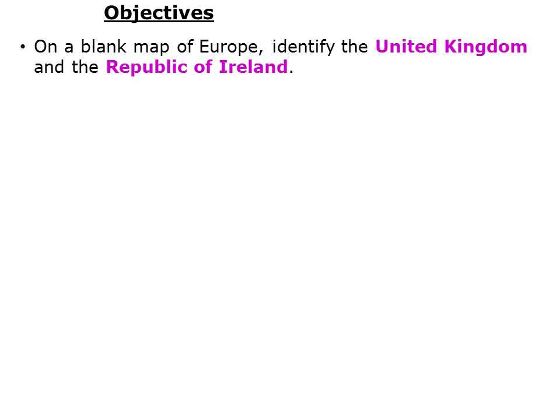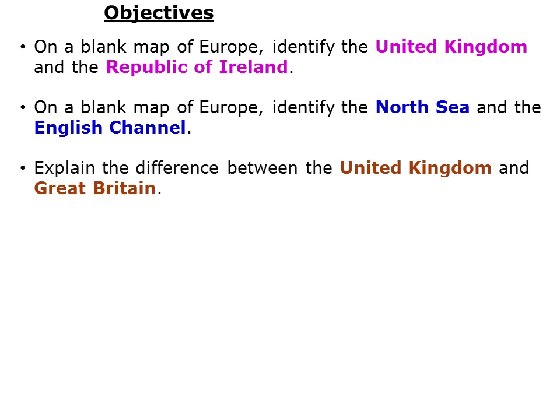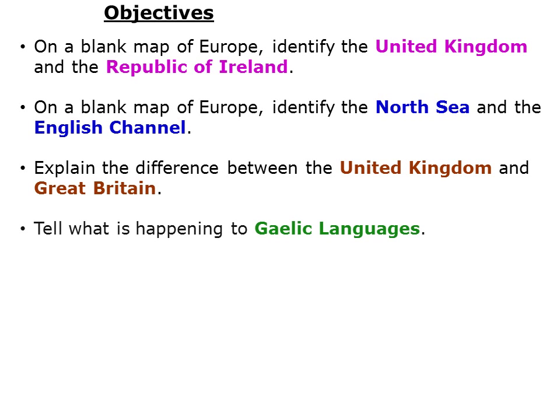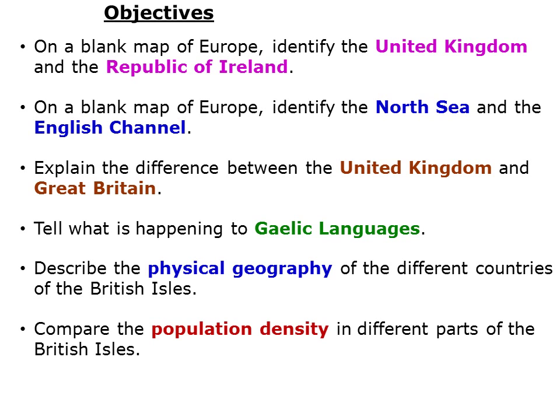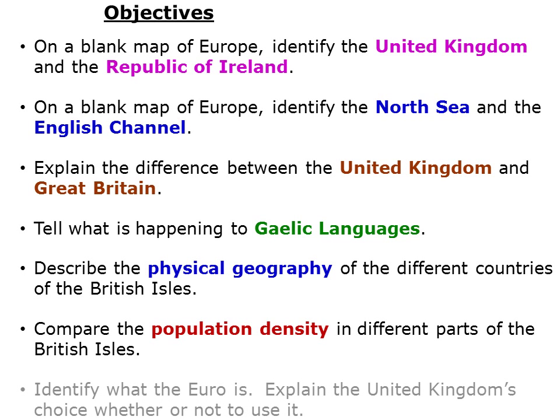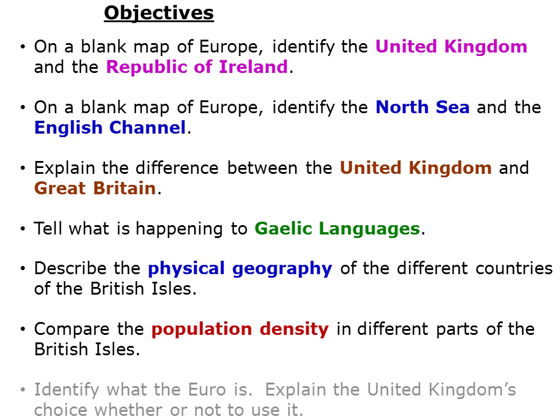Your objectives: On a blank map of Europe, you must be able to identify the United Kingdom and the Republic of Ireland. You must also be able to identify the North Sea and the English Channel. You must explain the difference between the United Kingdom and Great Britain. You must tell what's happening to Gaelic languages. You must describe the physical geography of the different countries of the British Isles, and compare the population density in different parts of the British Isles. You should be able to identify what the Euro is and explain the United Kingdom's choice whether or not to use it.